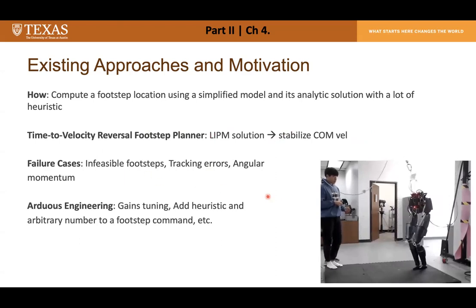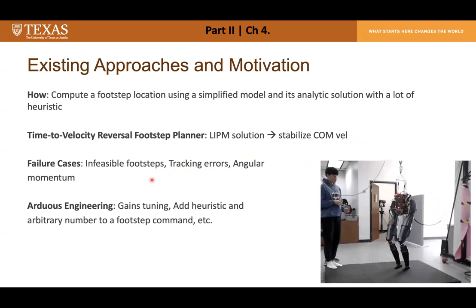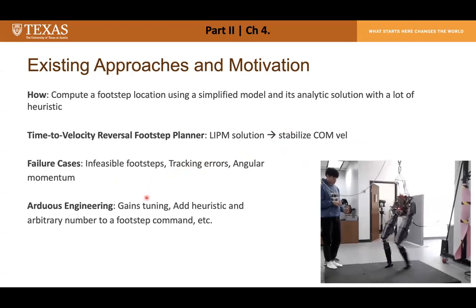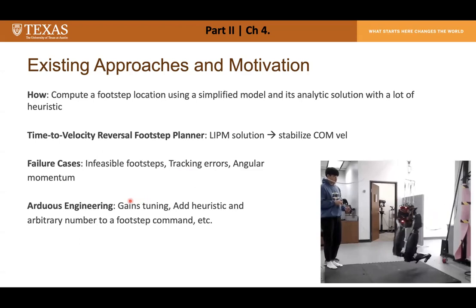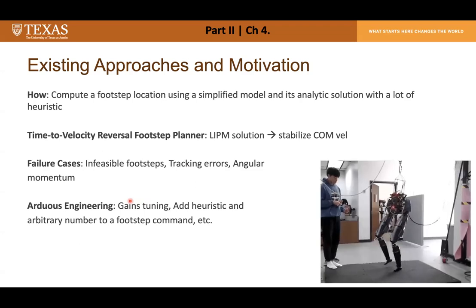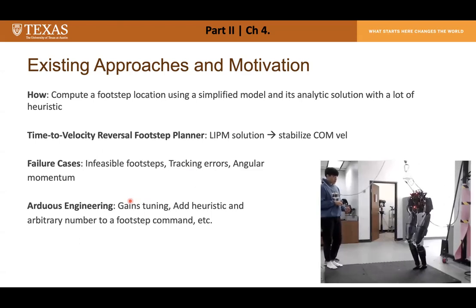Although we achieved some successful results, there were many failure cases — particularly when the robot failed to step to the footstep location computed by the TBR planner — potentially due to model discrepancy or tracking error by the whole-body controller. After every experiment I had to do arduous engineering such as gain tuning and adding arbitrary numbers to the step commands — repeating the cycle of running experiments, observing results, and changing parameters. I realized I was acting as a human agent doing reinforcement learning.